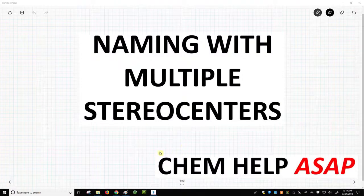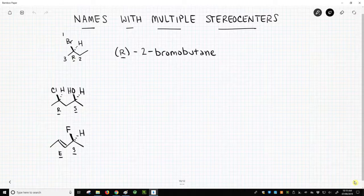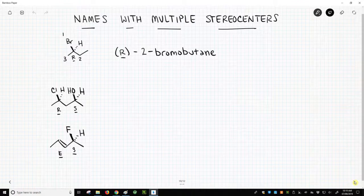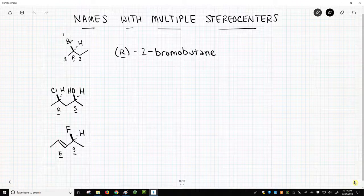Hello from Chem Help ASAP. We're going to learn about how to handle multiple stereocenters within one molecule. On the top of the screen, we have a molecule. I believe we've named this before in another video in this playlist, but this is R-2-bromobutane. There's really not much to this molecule, but sometimes you have multiple stereocenters in a molecule. So where do you put all these R's and S's when you have more than one?